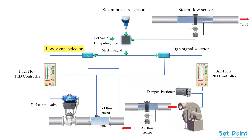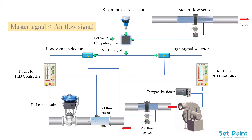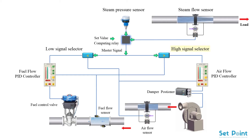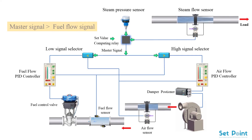In the low signal selector, the master signal is compared with the signal representing the air flow. The selector passes the master signal only if it is lower. In the high signal selector, the master signal is compared with the signal representing the fuel flow. The selector passes the master signal only if it is higher.